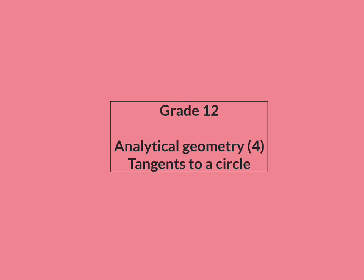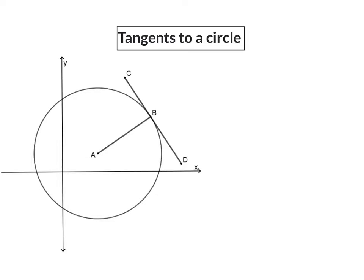In lesson four on analytical geometry we are having a look at tangents to a circle. In grade 11 Euclidean geometry we looked at a few theorems on tangents and circles, and one of those was that the tangent is always perpendicular to the radius at the touching point.